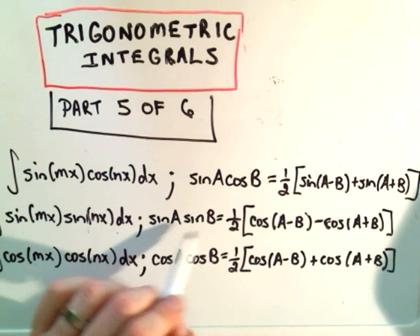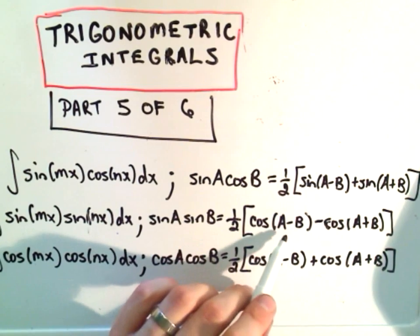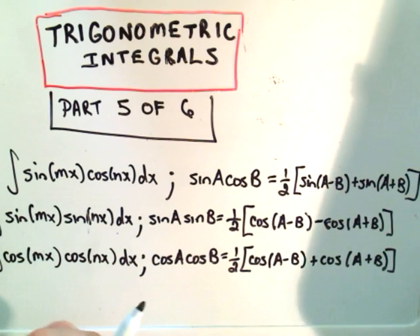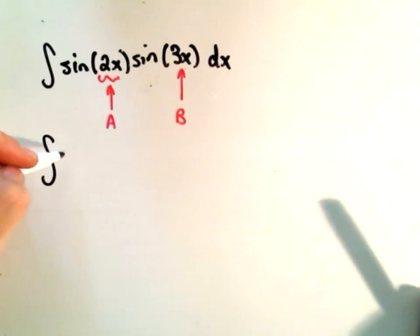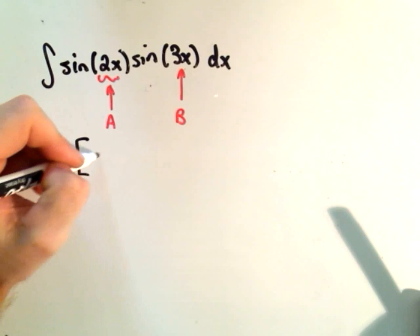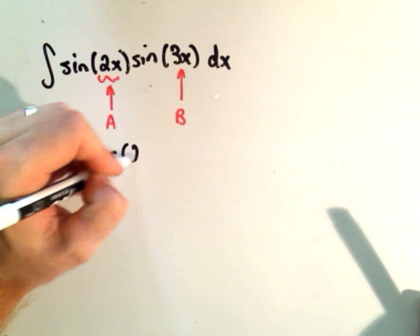It's got a little rubbed out. It says we take one-half, we take cosine of the difference, and then subtract cosine of the addition. So it says we'll get one-half, cosine of the difference,